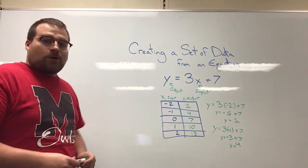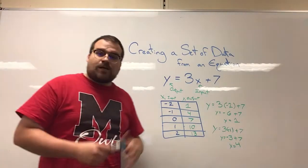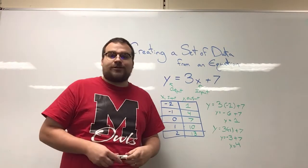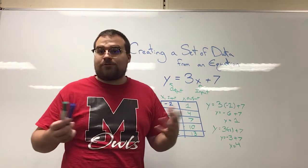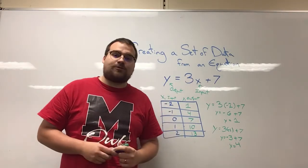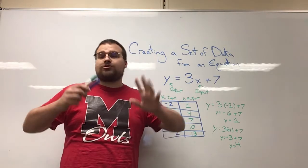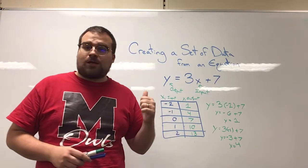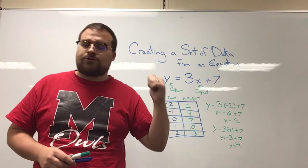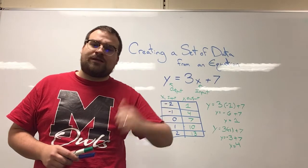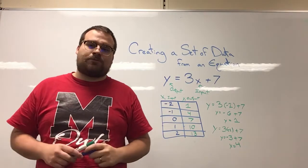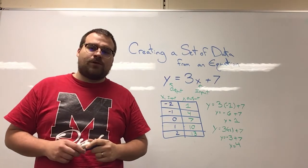So this is the process. If you want to choose an x squared equation, an x to the fifth equation, anything in the world — it can be a huge long polynomial. You can plug it in, solve it, put in inputs, get out outputs, and make your data set.